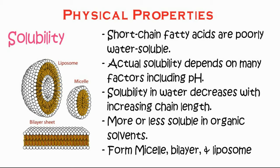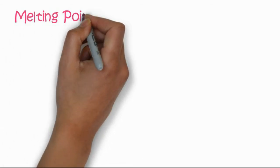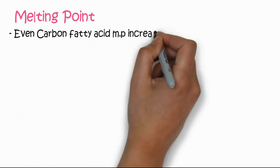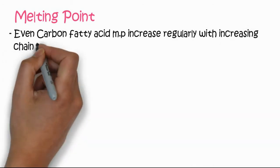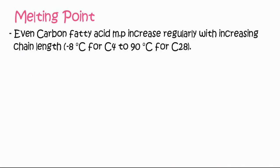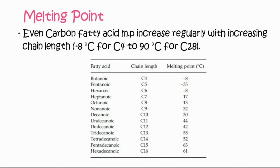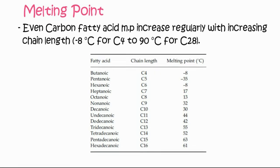The second property is melting point. For even carbon fatty acids, the melting point increases regularly with increasing chain length. For example, C4 has a melting point of minus 8 degrees centigrade, increasing up to 90 degrees for C28. C5 is at minus 35, and hexadecanoic acid, palmitic acid C16, has a melting point of 61 degrees centigrade.